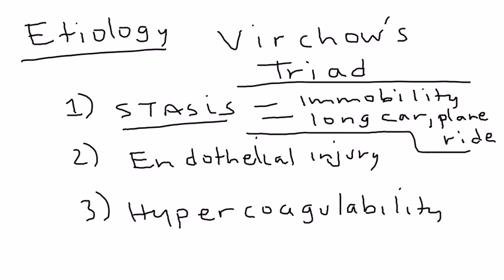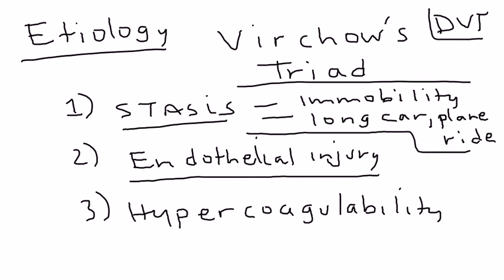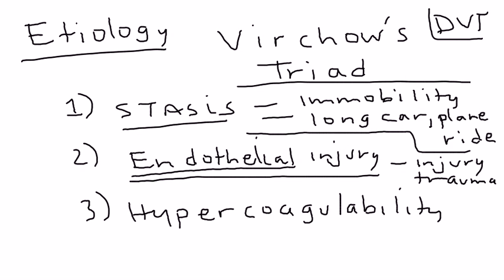The second cause is endothelial injury, which means some sort of injury or trauma, usually to the leg, that sets off a cascade developing a blood clot. Specifically, the endothelium is injured or damaged, and in repairing it, the body sets off a cascade that develops one or several blood clots, which can unfortunately cause a DVT.